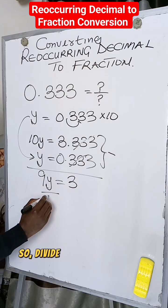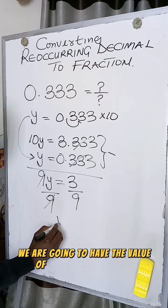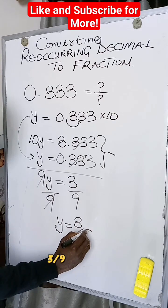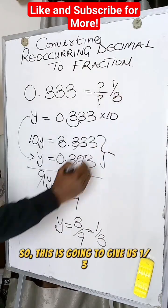So divide here by 9 and divide here by 9. We're going to have the value of our y to be equal to 3 divided by 9, which is 1 divided by 3. This is going to give us 1 divided by 3.